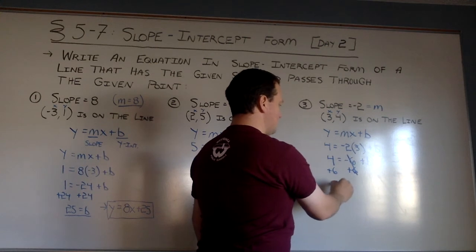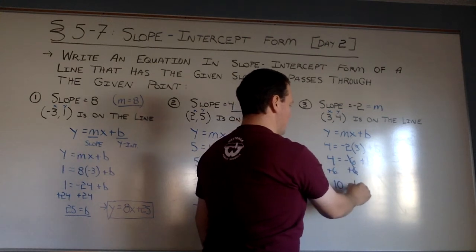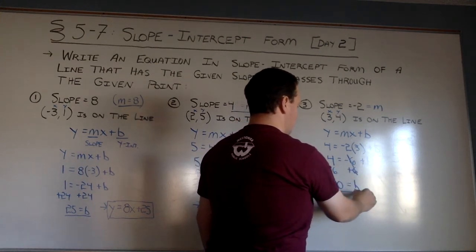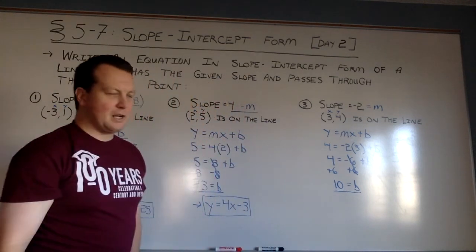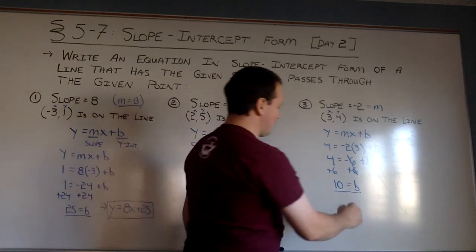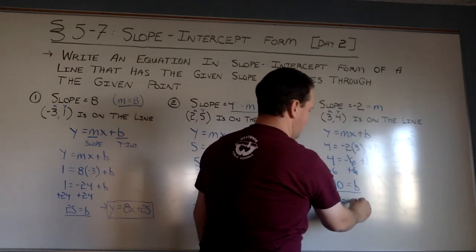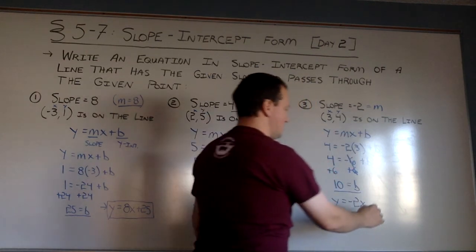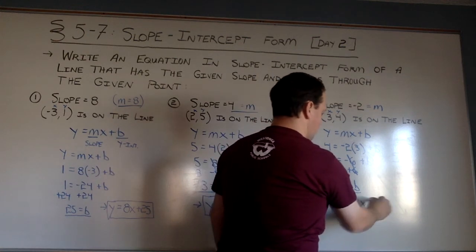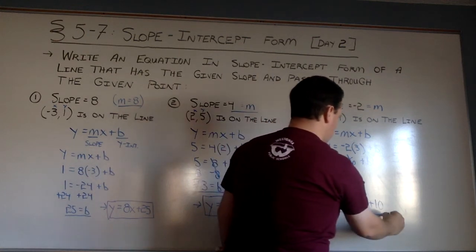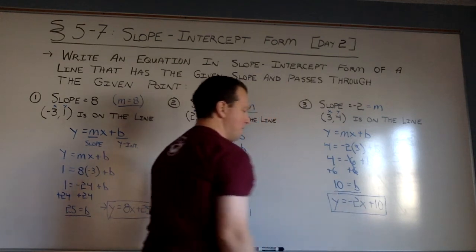4 and 6, 10 is the y-intercept. Let's write our final equation and stick a fork in it, because we'll be done. Y equals m, negative 2x, plus b is 10. There we have it.